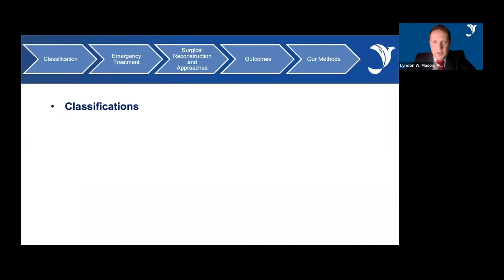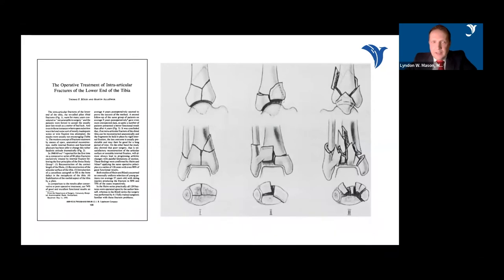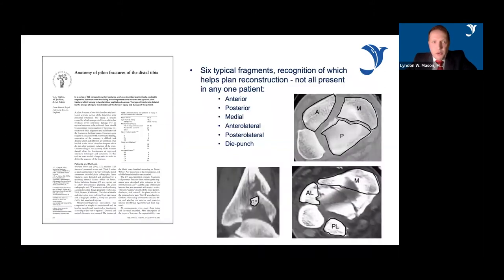First, classifications. In the late 1970s, Ruedi-Allgöwer's classification of pilon fractures was really the good, the bad, and the ugly. My trainer Claire Topliss — I trained under her, she's now in Swansea — described six typical fragments of pilon fractures: the anterior, posterior, medial, anterolateral, posterolateral, and the die-punch fragments. Not all pilons have each of these fragments, but these are the typical fragments you will find in pilon fractures.